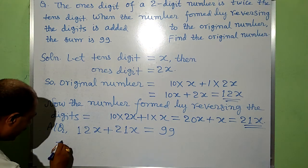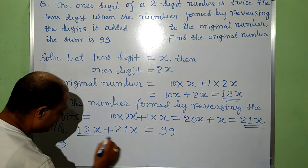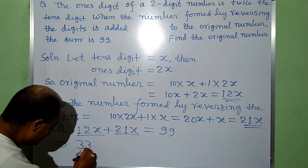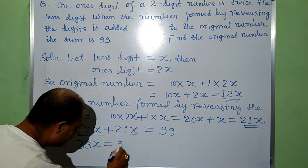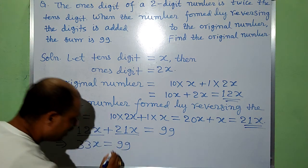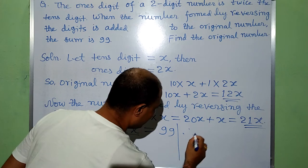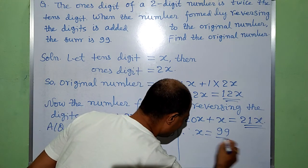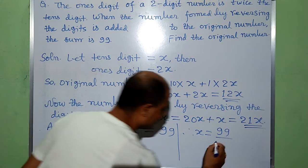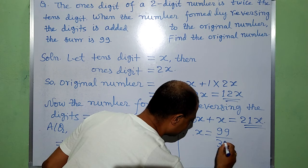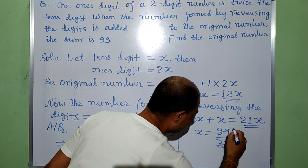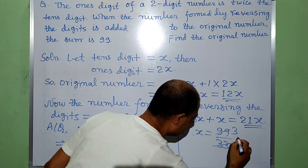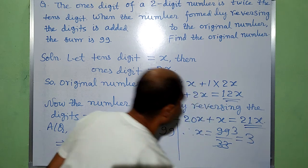12x plus 21x equals 33x, which is equal to 99. Hence x is equal to 99 divided by 33, that is equal to 3.